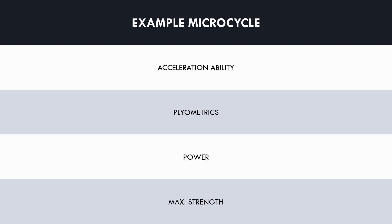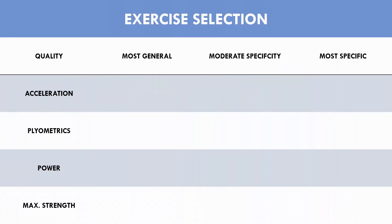The first programming variable to consider is exercise selection. The exercises selected for each quality will be different for different times of the year based on when an athlete needs to peak. For each quality let's explore three exercises that can be implemented with different levels of specificity.